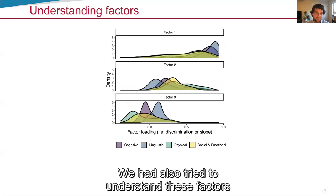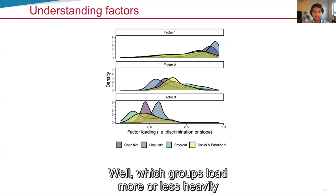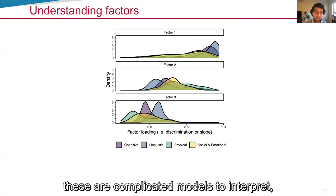We also try to understand these factors on the milestone side by seeing, can you label them into groups? Which groups load more or less heavily under which factors? These are high dimensional, these are complicated models to interpret.